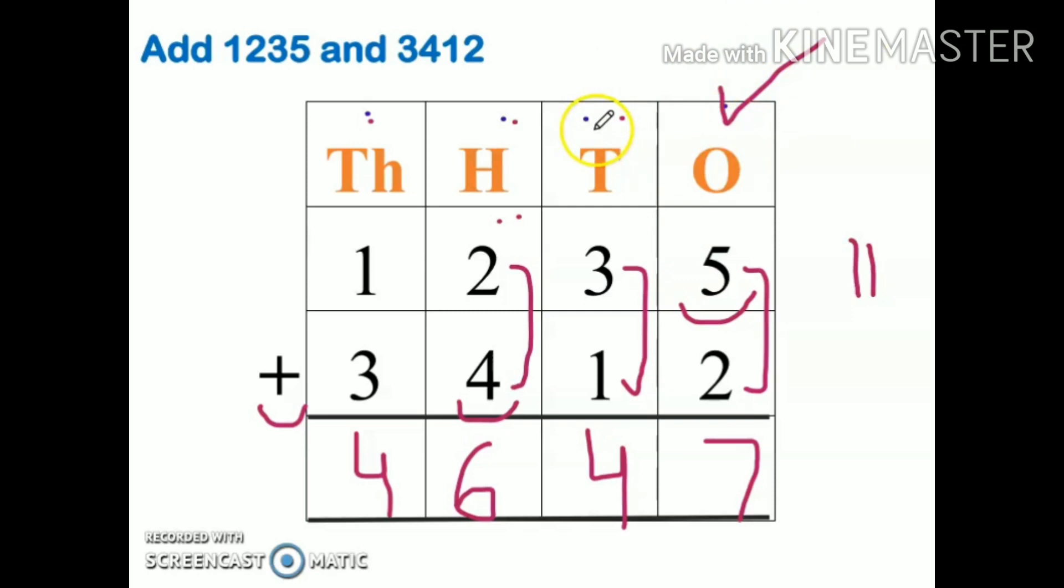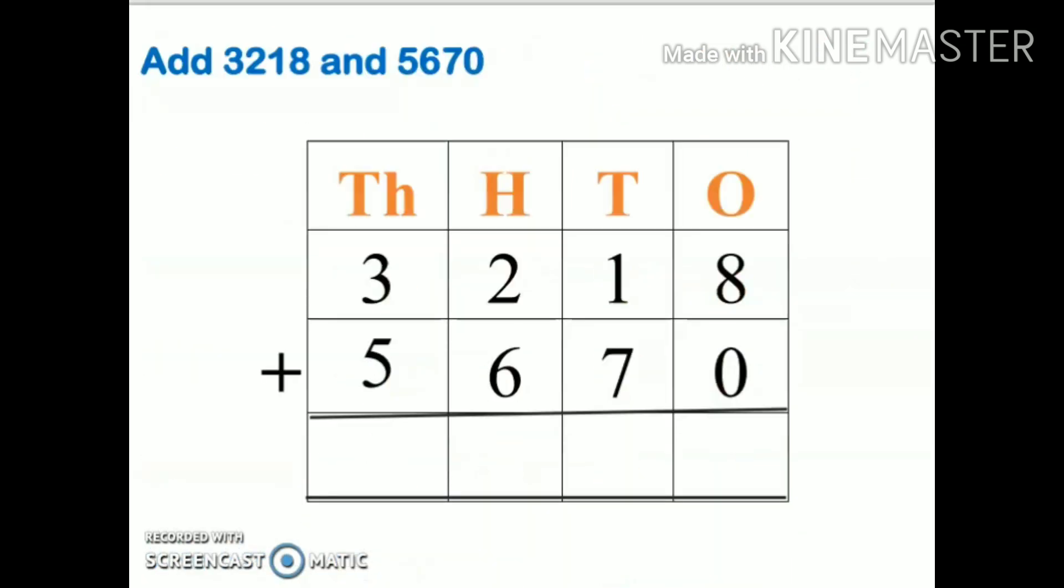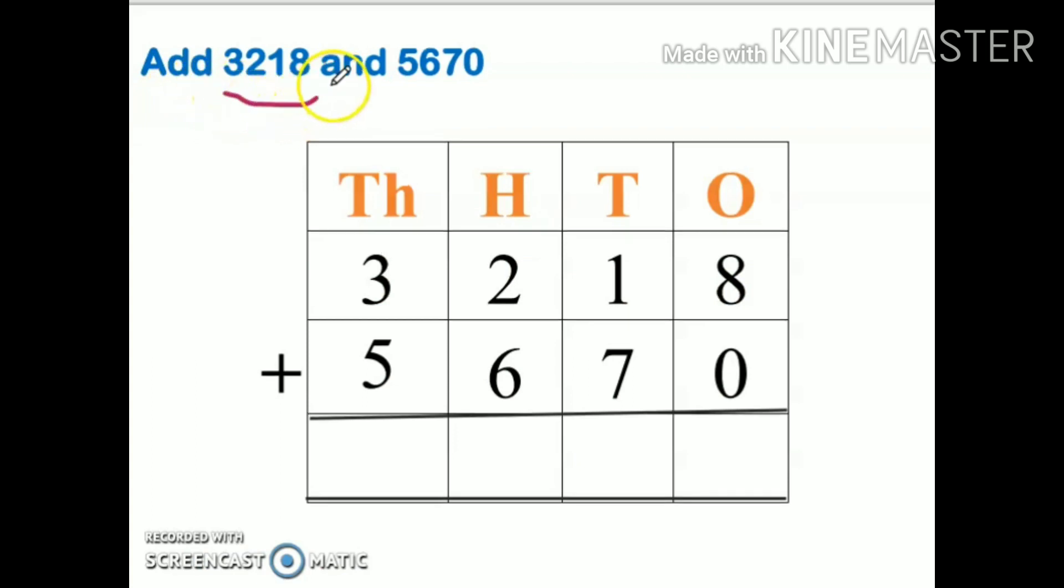My next question: add 3218 and 5670. I have written both numbers in order and put the plus sign here. I will start the sum from one's place.